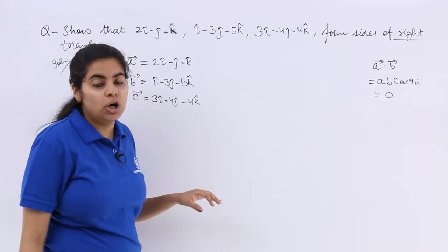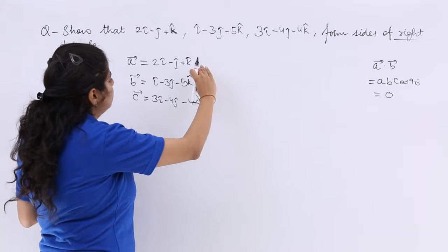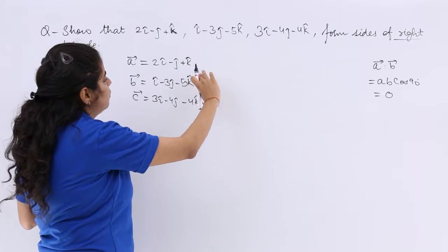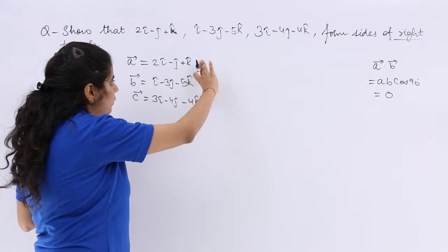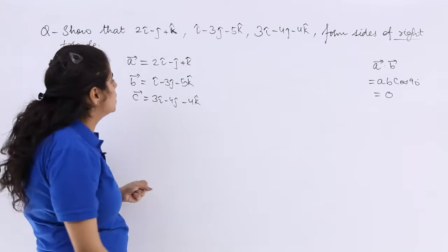Now what is the dot product? So the dot product probably of A and B, of B and C, of A and C. Something or the other should be giving me 0.